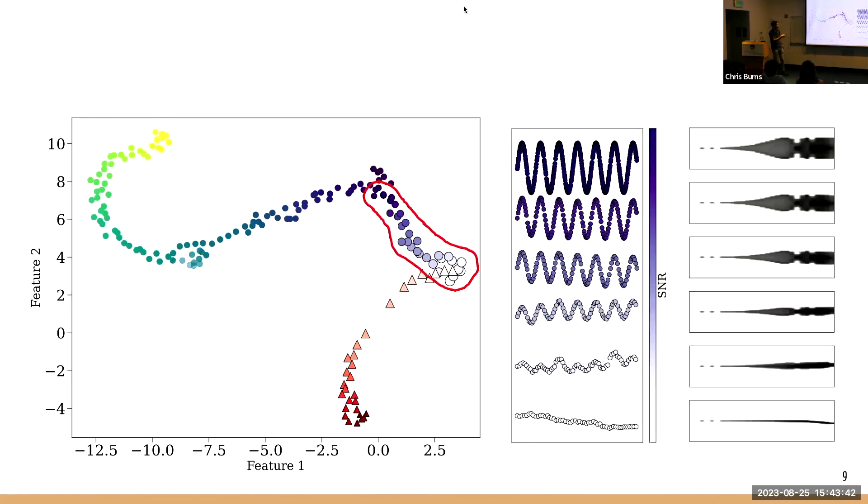Additionally, let's take a look at this branch right here. If we take one periodic light curve from our set and adjust just the signal to noise ratio, we notice that when we have more and more noise, less signal, we get farther and farther away from our main sequence of periodic light curves.